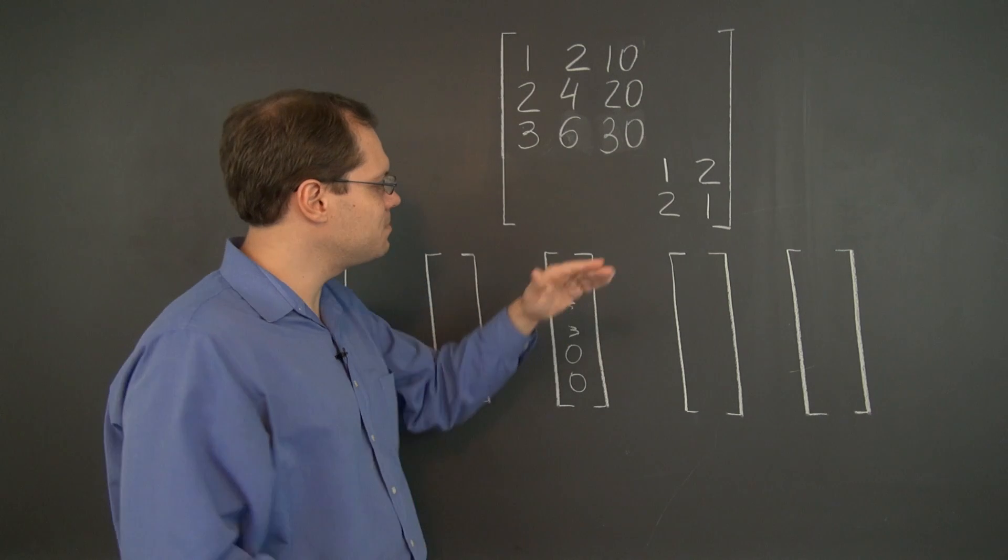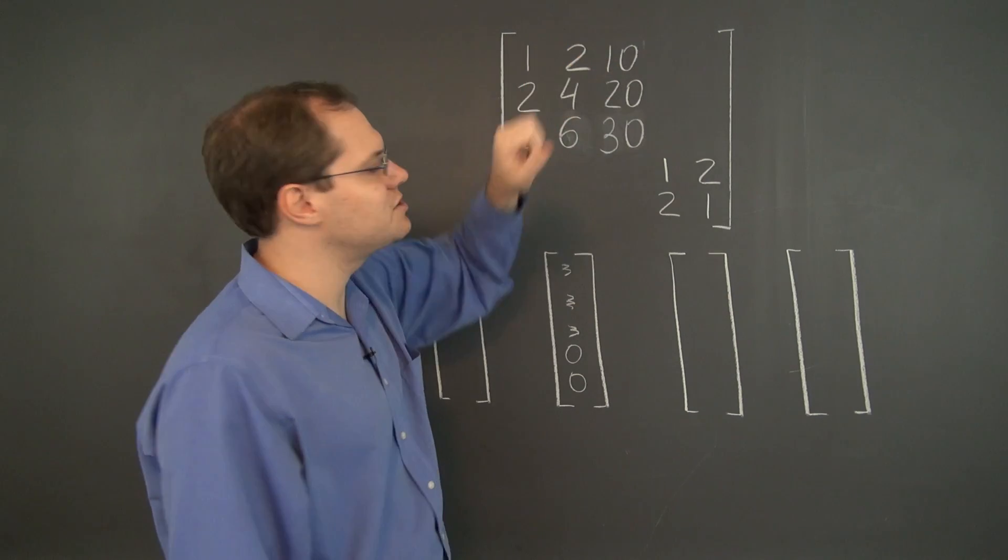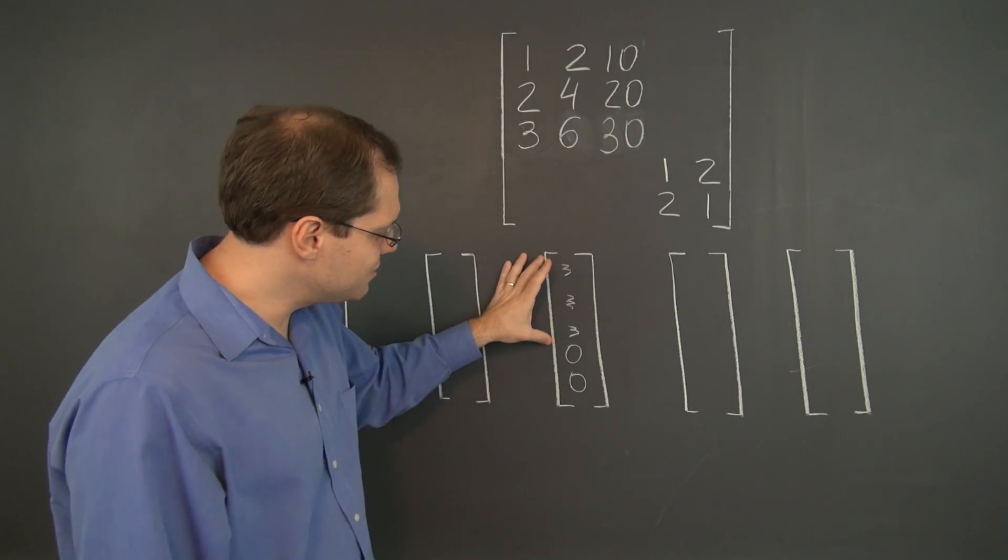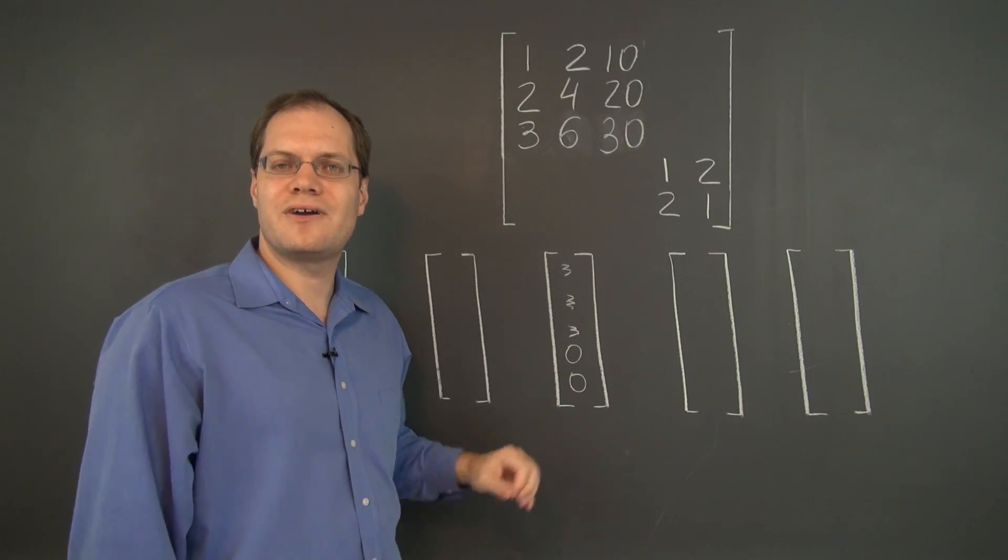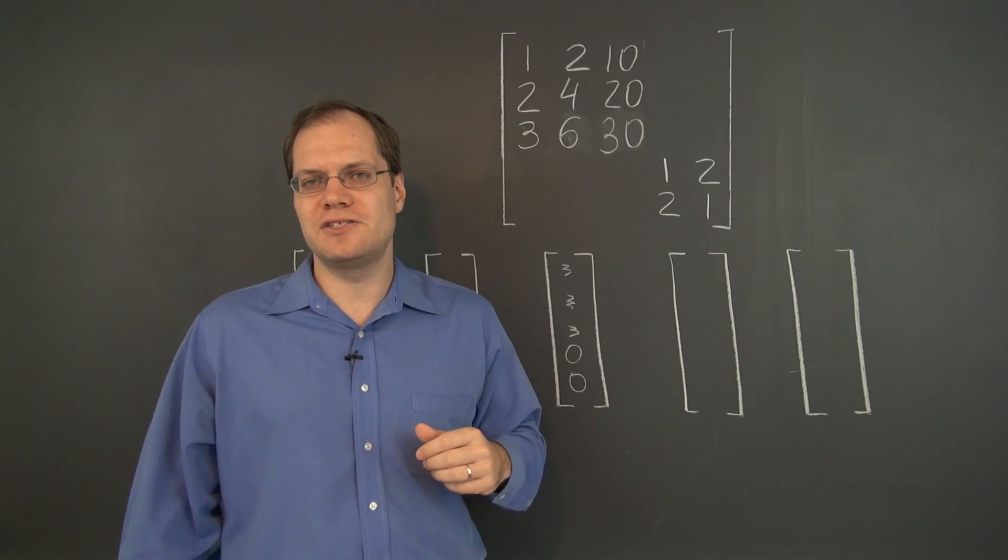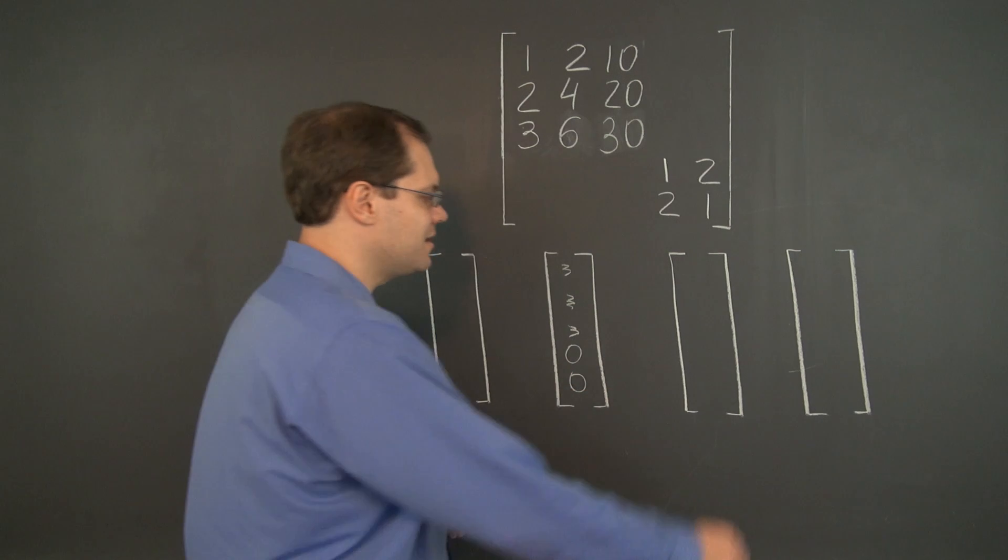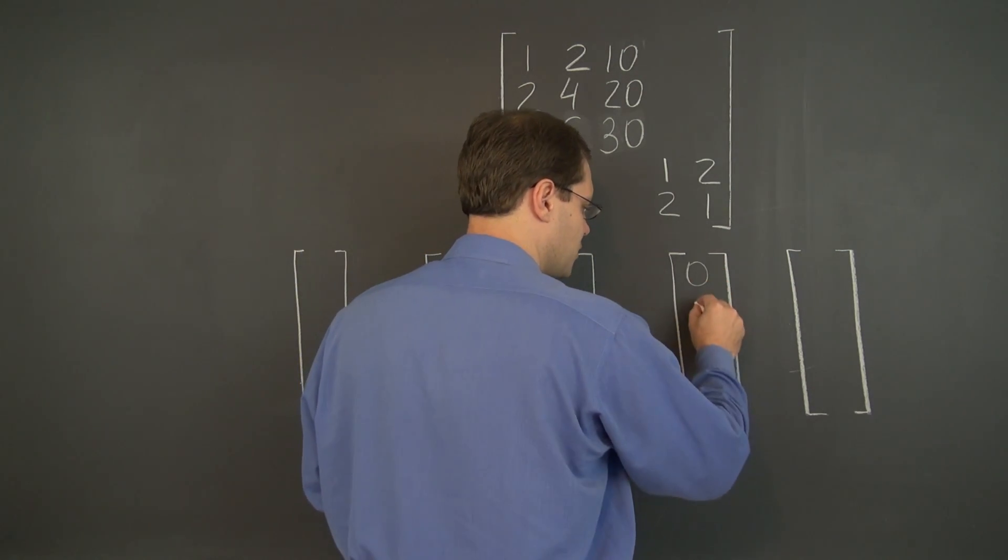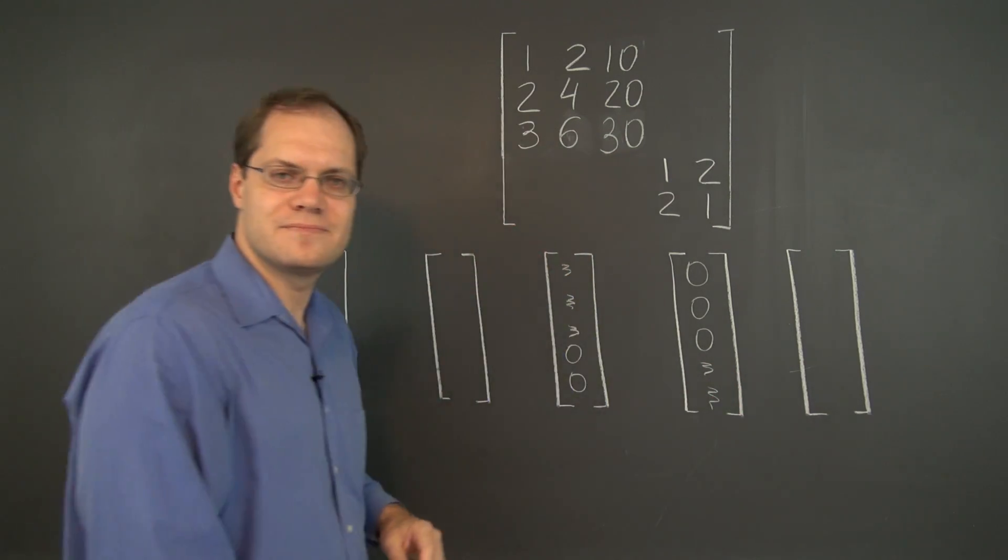So multiplying this whole matrix by this vector is almost like multiplying this three by three matrix by this three by one vector and then adding two zeros. It's just two subspaces within the five-dimensional space. The subspace of the first three entries and the subspace of the last two entries, which of course would interact similarly with vectors like this.